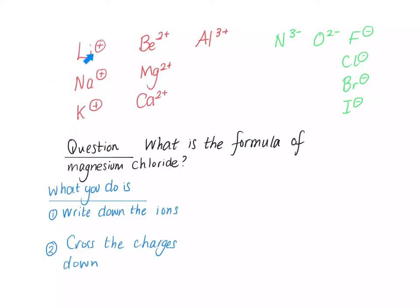So here we have a list of common ions: lithium, sodium, potassium, beryllium, magnesium, calcium, aluminium, nitrogen, oxygen, fluoride, chloride, bromide, iodide.